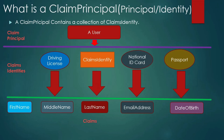To summarize: a claim is a piece of information about the user. A collection of claims makes a claims identity, with examples like the driving license, national ID card, and passport. All of these claims identities identify a specific person — you or me — who is the claims principal. Your first name, middle name, and last name in your passport will be the same in your driving license and national ID card, and all this information can be used to identify a user as the claims principal.